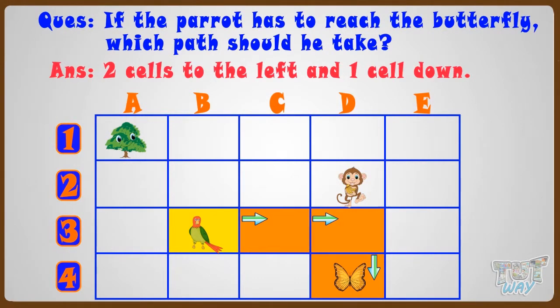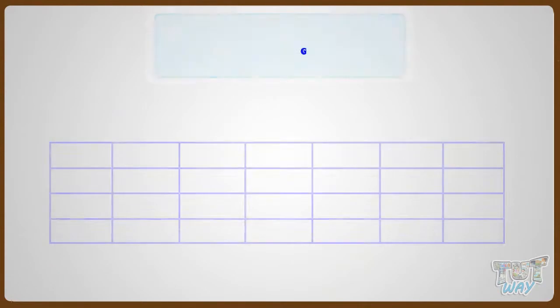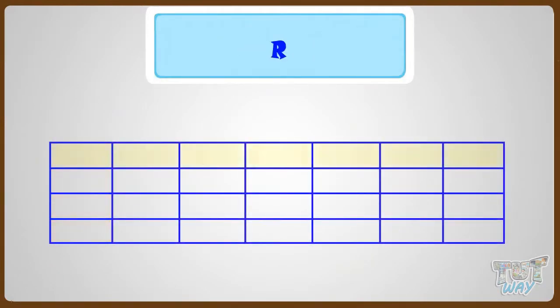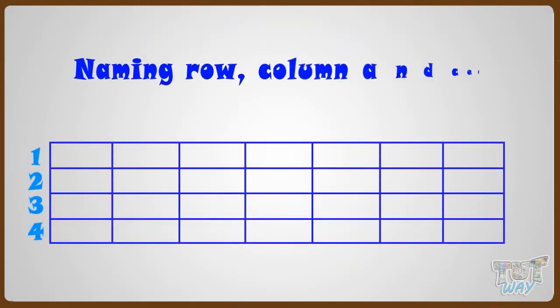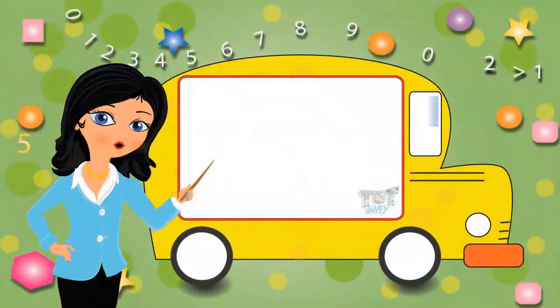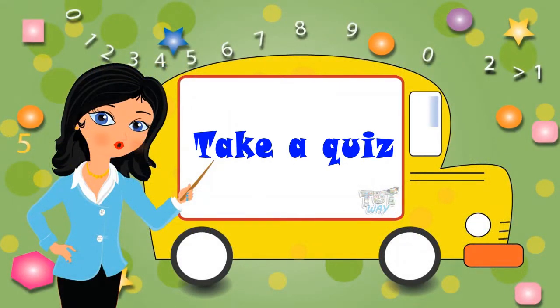So kids, now you know what are grids, what are columns and rows, how to name the locations in a grid. Now go ahead and take a quiz to learn and practice more. Bye-bye!